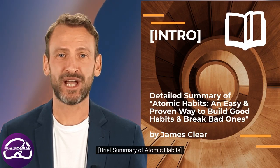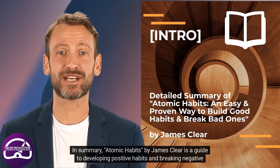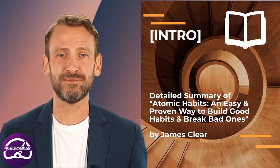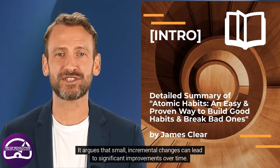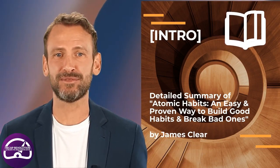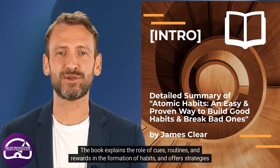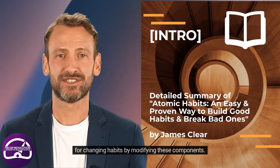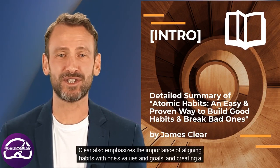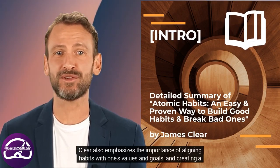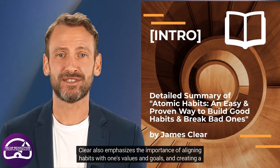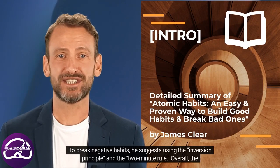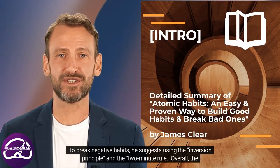In summary, Atomic Habits by James Clear is a guide to developing positive habits and breaking negative ones. It argues that small, incremental changes can lead to significant improvements over time. The book explains the role of cues, routines, and rewards in the formation of habits, and offers strategies for changing habits by modifying these components. Clear also emphasizes the importance of aligning habits with one's values and goals and creating a positive environment to support good habits. To break negative habits, he suggests using the inversion principle and the two-minute rule.